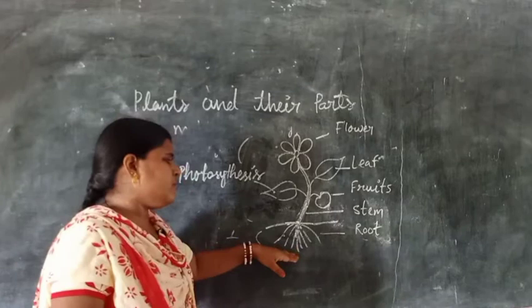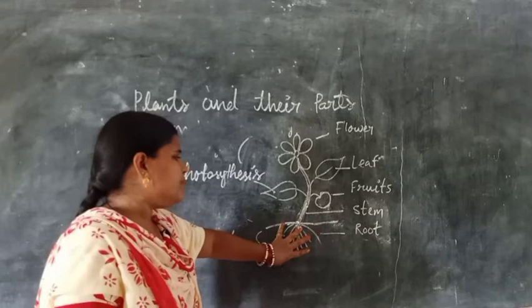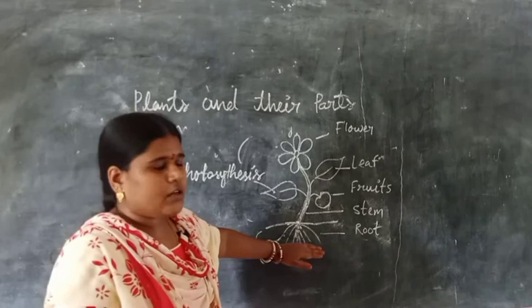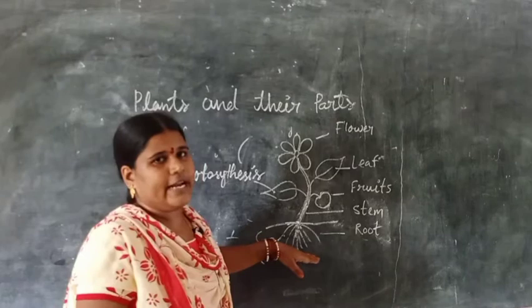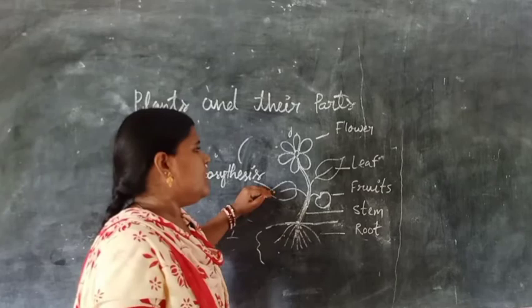Now let us know about the root. Roots absorb water and nutrition from the soil and hold the plant tightly under the soil. In some plants, the plant also stores food in the root. We eat the roots of some plants — we eat potato, carrot, onion, and radish. These are roots of plants which are under the soil.